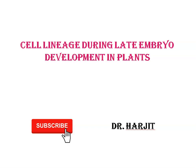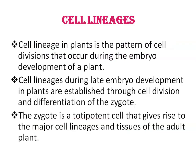Today, we are going to talk about cell lineages during late embryo development in plants. Cell lineage in plants is the pattern of cell divisions that occur during the development of a plant. In other words, it is the developmental history of a plant's tissue or organ from the fertilized egg to a mature cell that can no longer divide. Cell lineages during late embryo development in plants are established through cell division and differentiation of the zygote, which is the product of fertilization. This zygote is a totipotent cell that gives rise to the major cell lineages and tissues of the adult plant.